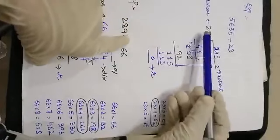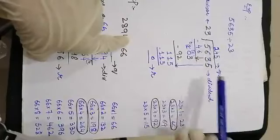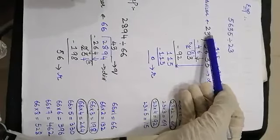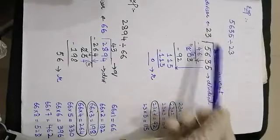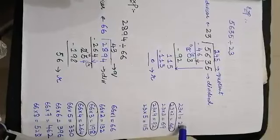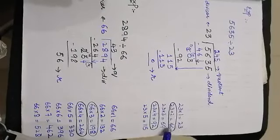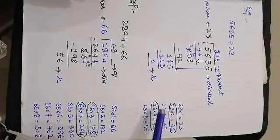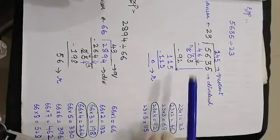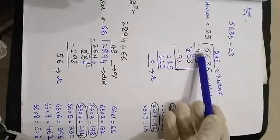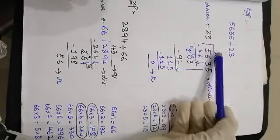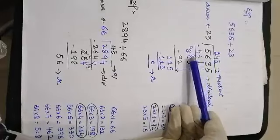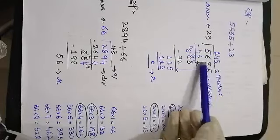The divisor has two digits, so we consider the first two digits of the dividend: 56. Since 23 ones are 23 and 23 twos are 46, and 46 is less than 56, we use 23 twos are 46. So 6 minus 6 is 0, 5 minus 4 is 1. Bring down the next digit, 3, making the value 13.